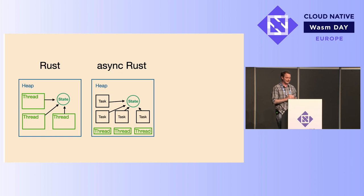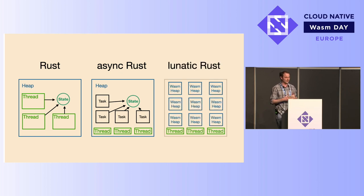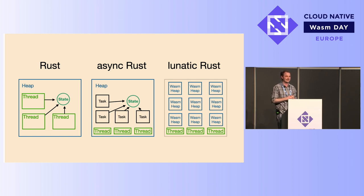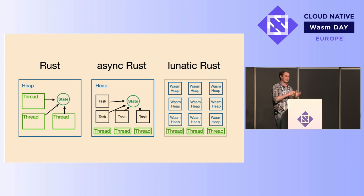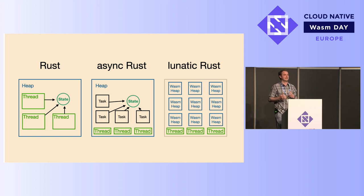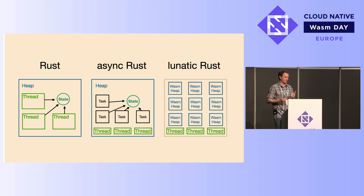What we do with Lunatic is introduce a new concurrency model to Rust: we turn each task into a WebAssembly instance, so each task gets its own linear memory. This means it's safe to restart each individual task and we can guarantee that the memory will be completely fresh and the state will be new. And to be able to do this feels like a superpower, because the Rust language was not even designed to support this — just by applying WebAssembly, we get this awesome property.